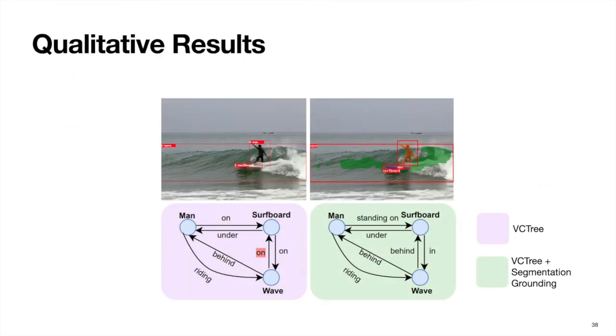Here, we show a qualitative prediction of our model in contrast to the baseline VCTree model. Note that our model predicts more granular relations such as standing on and behind as opposed to the general relation on by the baseline.